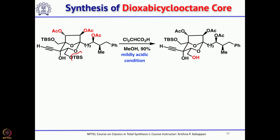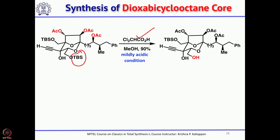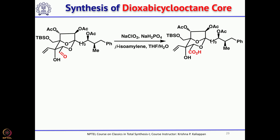The triple bond is reduced to the double bond under hydrogenation conditions. Dess-Martin periodinane oxidation converts the primary alcohol to an aldehyde, which upon Pinnick oxidation gives the carboxylic acid — effectively converting CH2OH to carboxylic acid in two steps.